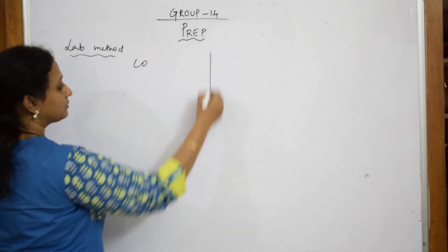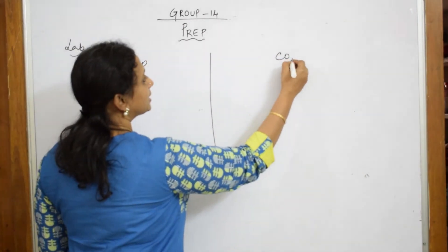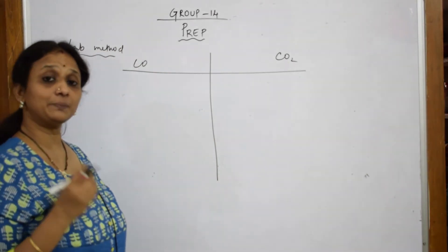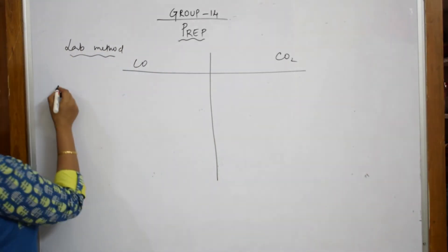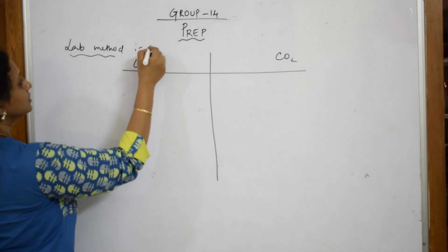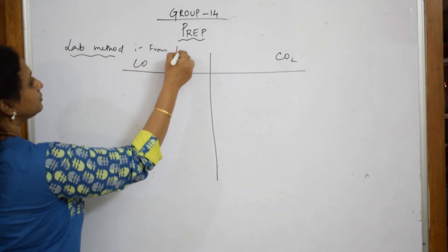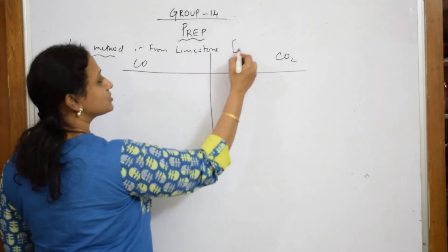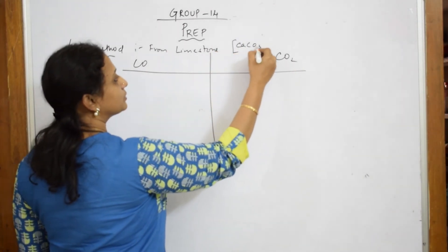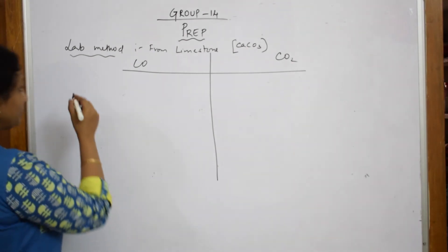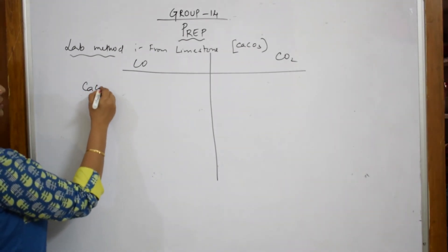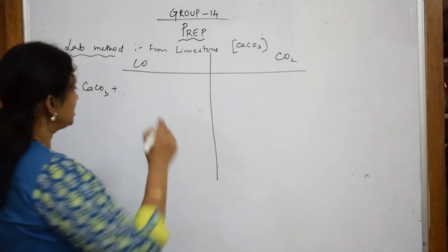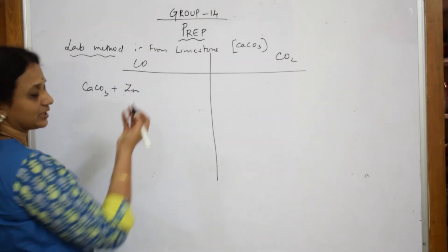So let us write both: carbon monoxide and carbon dioxide. For this lab preparation, I am going to pick up limestone. What is limestone? Limestone is calcium carbonate. So the lab method is from limestone. I am going to pick up calcium carbonate. Now I am going to add a reducing agent. What is a reducing agent? Remember: R-O-L — reducing agent loses electrons and itself gets oxidized.